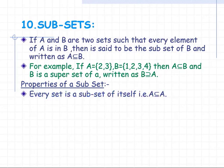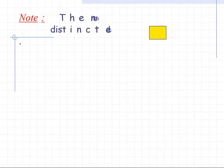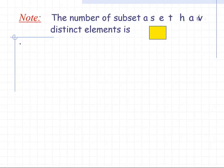Properties of subsets: every set is a subset of itself, meaning A ⊆ A. The empty set is a subset of every set, meaning φ ⊆ A. Note: the number of subsets of a set having n distinct elements is 2^n.